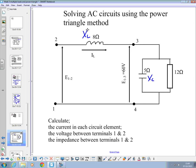You're asked to calculate the current in each circuit element, the voltage between terminals one and two, and the impedance seen by those two terminals, so the total impedance of that circuit. There are a number of ways you could tackle that, but we're going to use the power triangle theory to solve this problem.